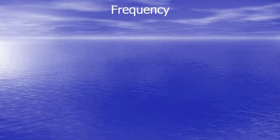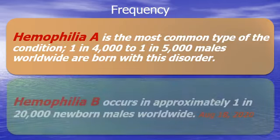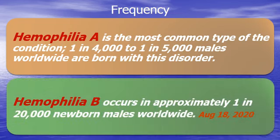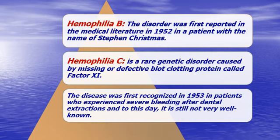Regarding prevalence and frequency: one in every 4,000 to 5,000 males are born with hemophilia A worldwide. One in every 20,000 newborn males may suffer from hemophilia B, which was first reported in 1952 in a patient named Stephen Christmas. Hemophilia C is a rare genetic disorder caused by missing or defective clotting factor 11, first reported in 1953 in patients who experienced severe bleeding after dental extractions.